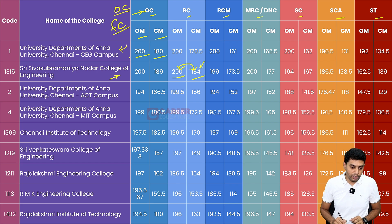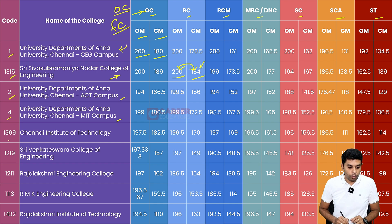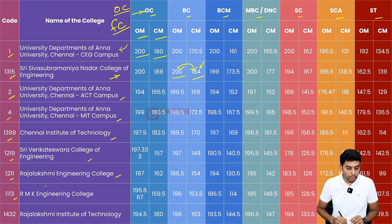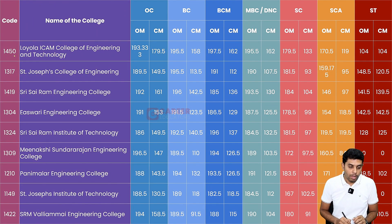Now let us discuss the colleges. The first college — we know the college code is really important. Next, let us look at the list of colleges we have.